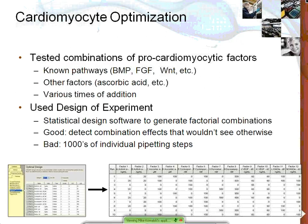Having a single embryoid body per well allowed us to screen for various conditions to improve cardiomyocyte differentiation yield. We tested combinations of factors known from literature to positively affect cardiomyocyte formation, targeting known pathways such as BMP, FGF, and WNT pathways, as well as factors like ascorbic acid. We also varied the times of addition, since timing can have significant positive or negative effects. Using a design-of-experiment approach with statistical design software, we generated factorial combinations of all these factors — this allows detection of combination effects, but results in thousands of individual pipetting steps where each well is essentially different, requiring automation.